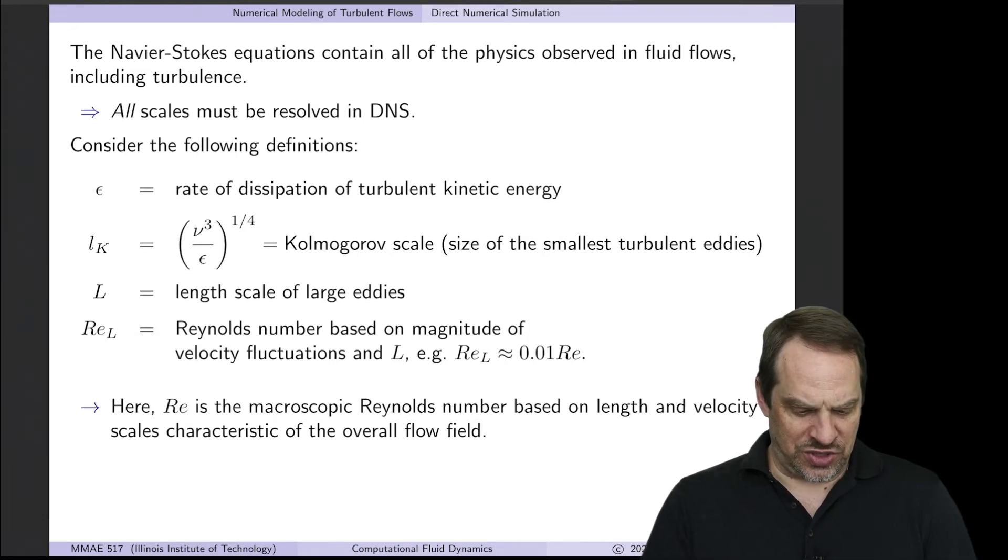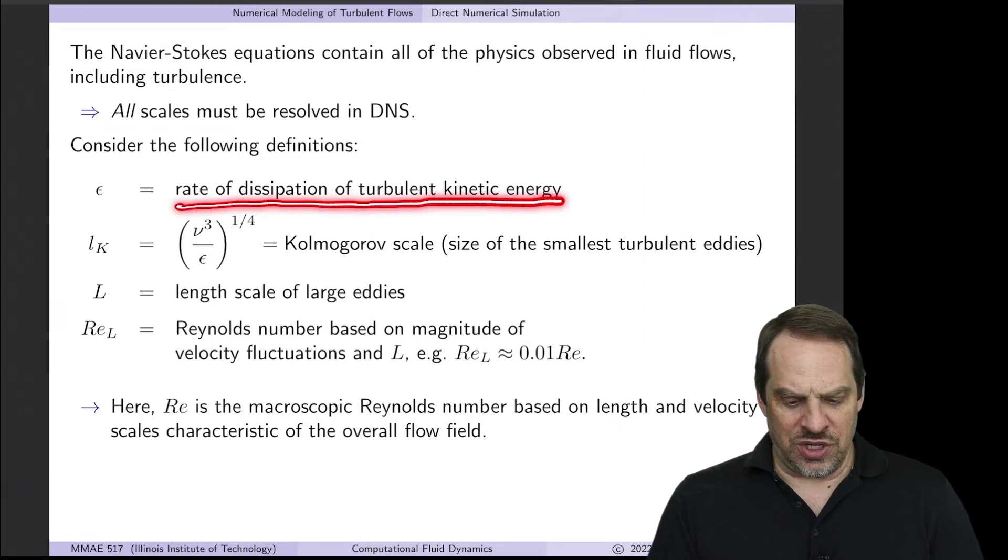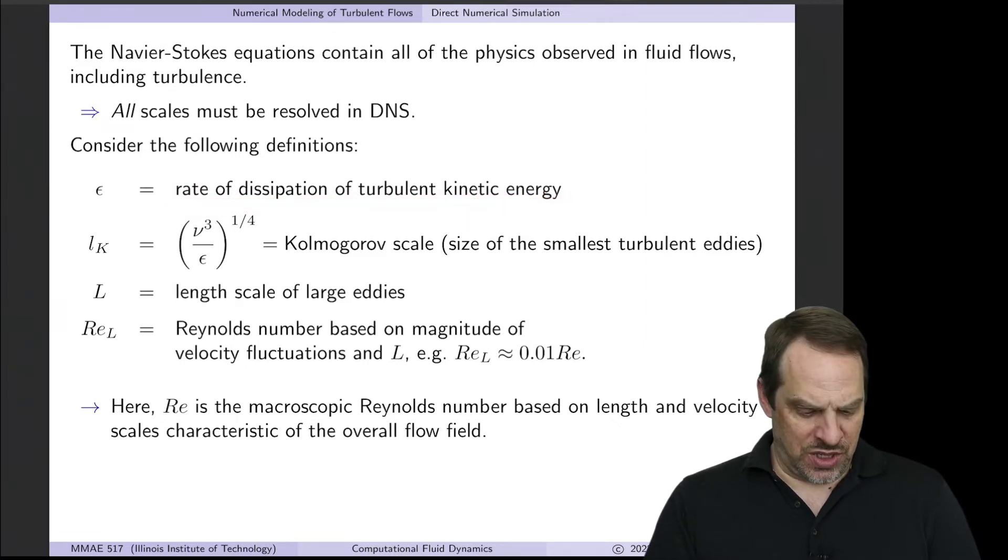ε throughout is going to be the rate of dissipation of turbulent kinetic energy. This L_K, the capital K stands for Kolmogorov, as in the Kolmogorov scale.